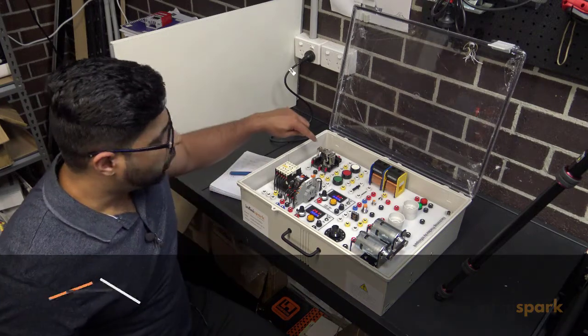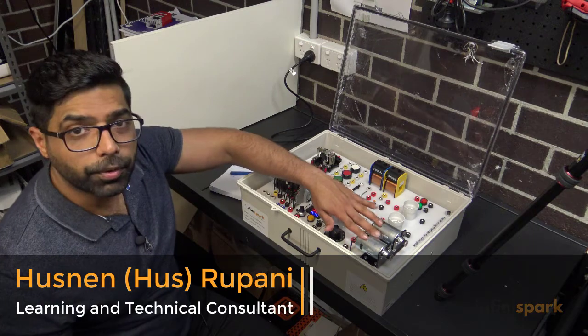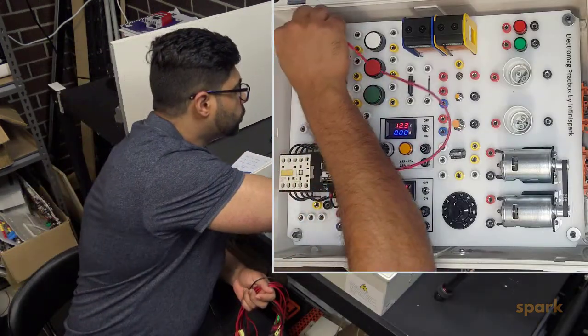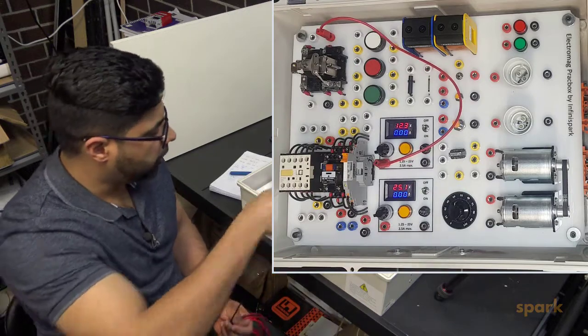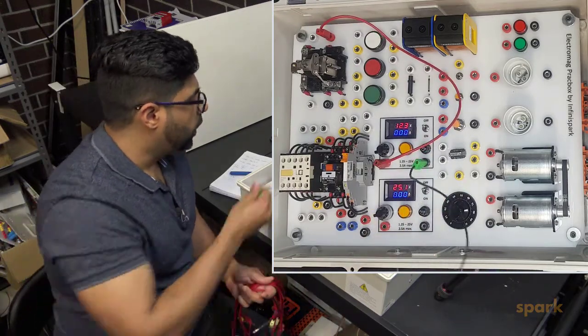Let's see how to wire the 12 volt relay to a load, and the load will be our motor. Positive of the power supply goes to positive of the relay coil, negative of the power supply goes to negative of the relay coil.